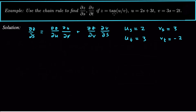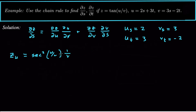Let's look at the derivative of z with respect to u, and also the derivative of z with respect to v. So ∂z/∂u: we differentiate the tangent function and get sec²(u/v), then differentiate the inside u/v with respect to u, which gives 1/v. So ∂z/∂u = (1/v) · sec²(u/v).